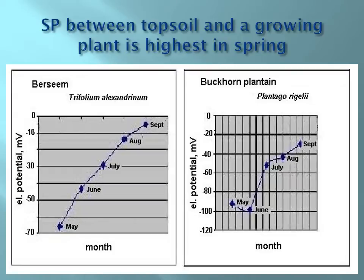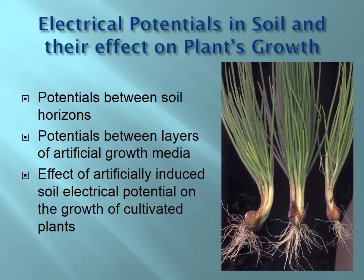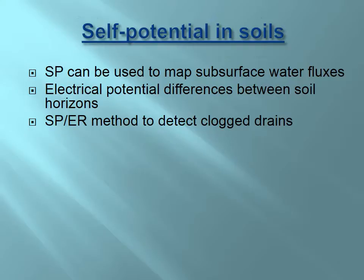There are also natural electrical potentials between soil horizons or between layers of artificial growth media, and those potentials influence plant growth. We artificially created a horizontal drift of self-potential in soil using metal spikes in a middle row, and we observed that onion plants curved toward the potential — the best growth was in the middle row, from the highest potential difference.